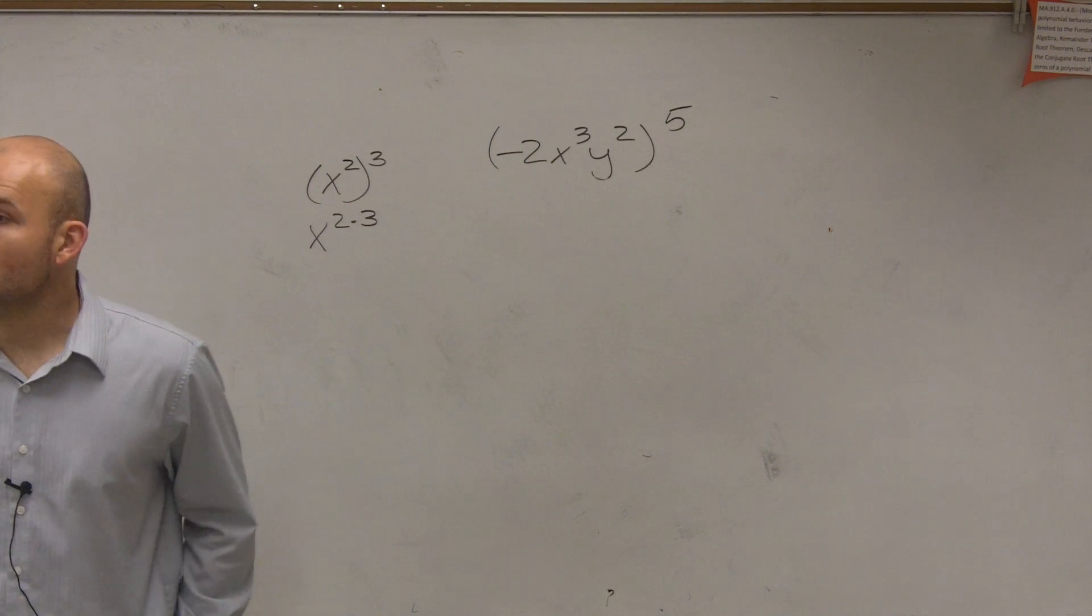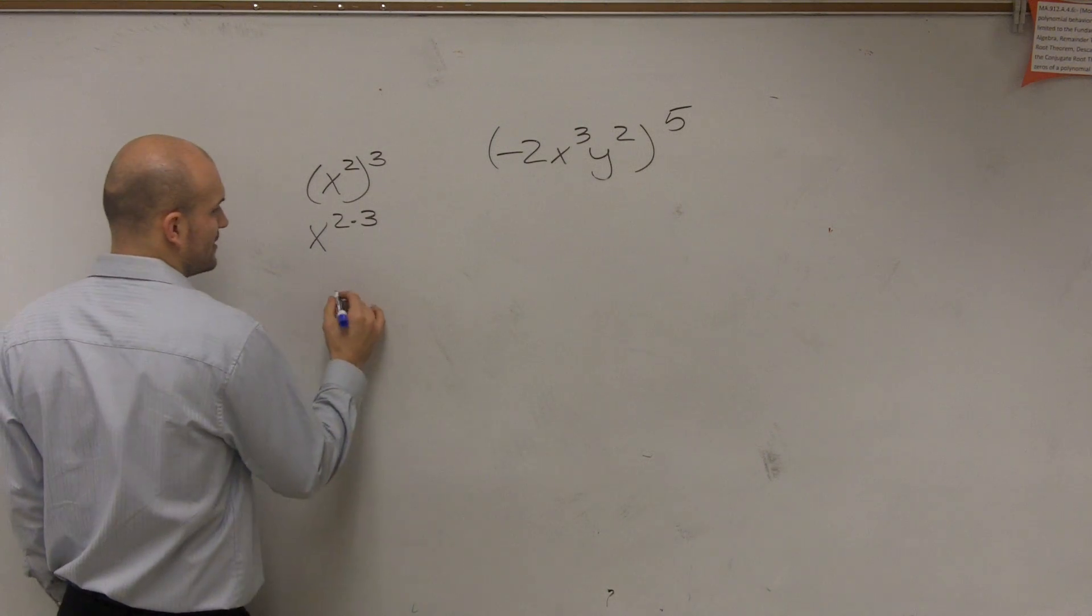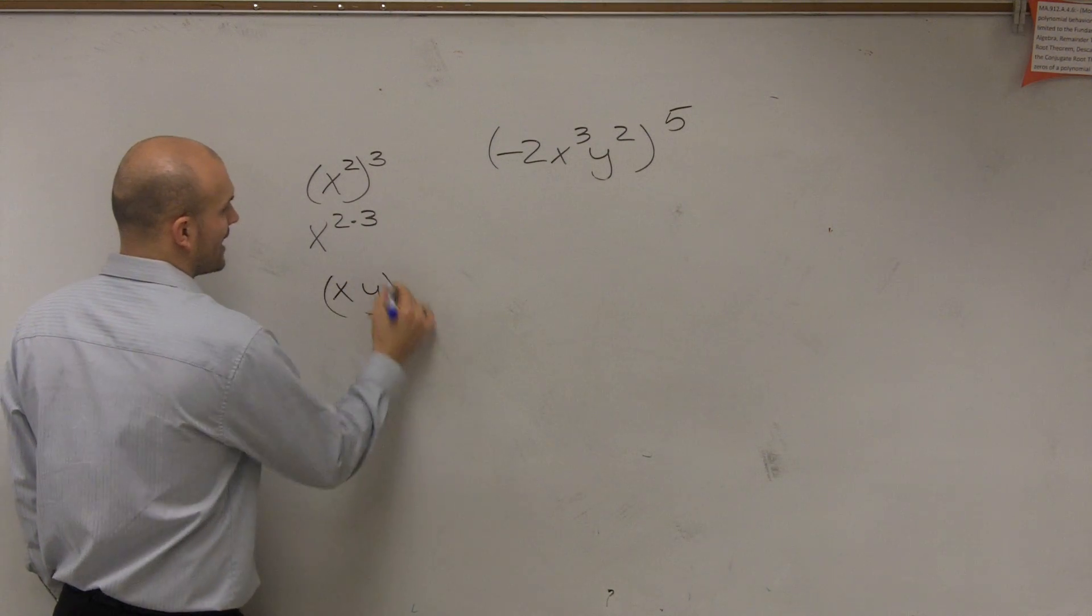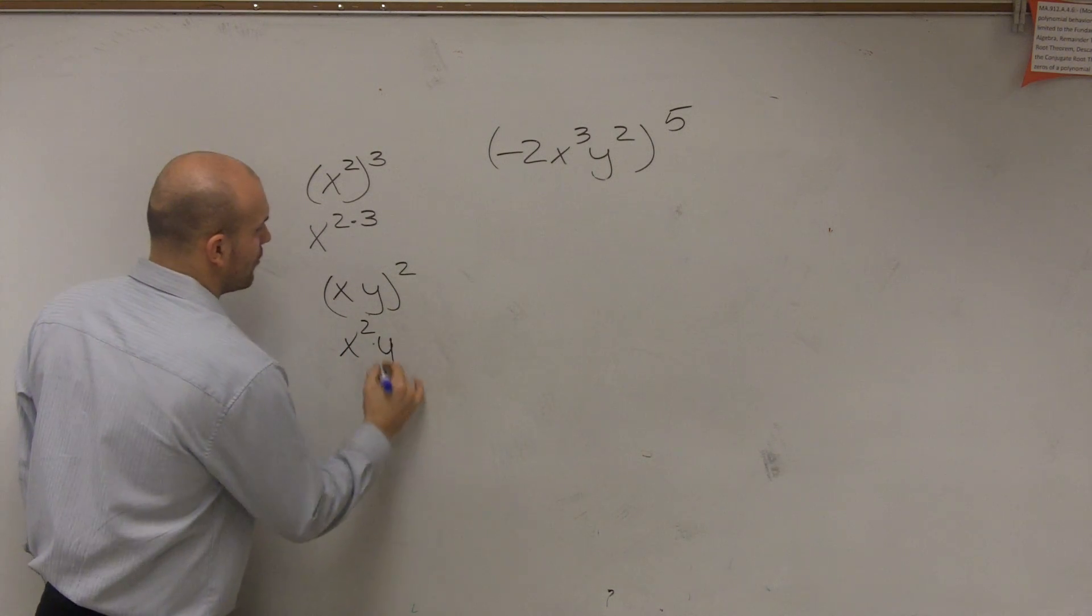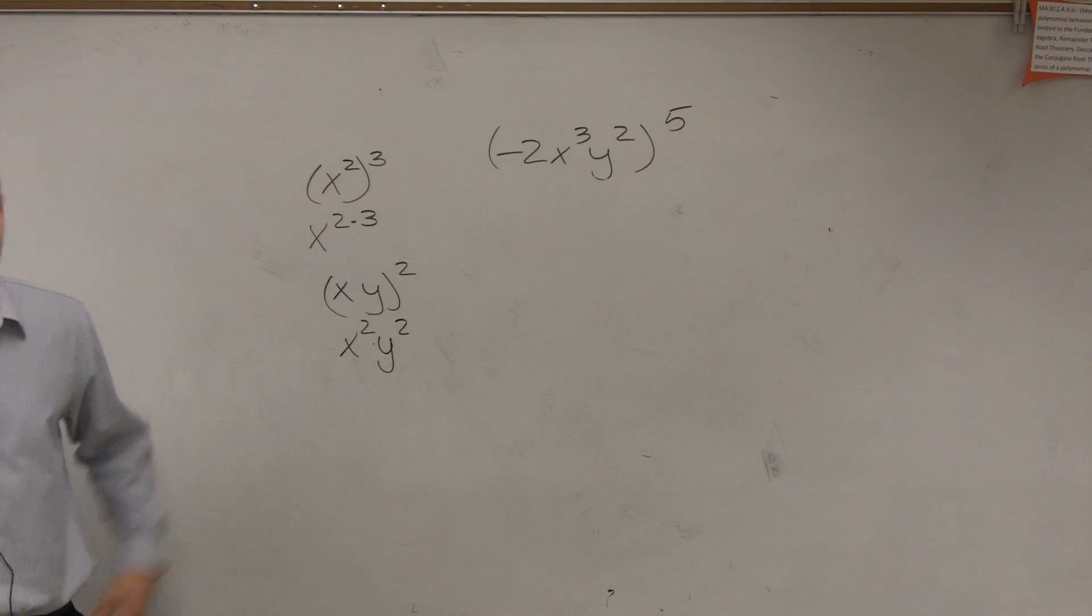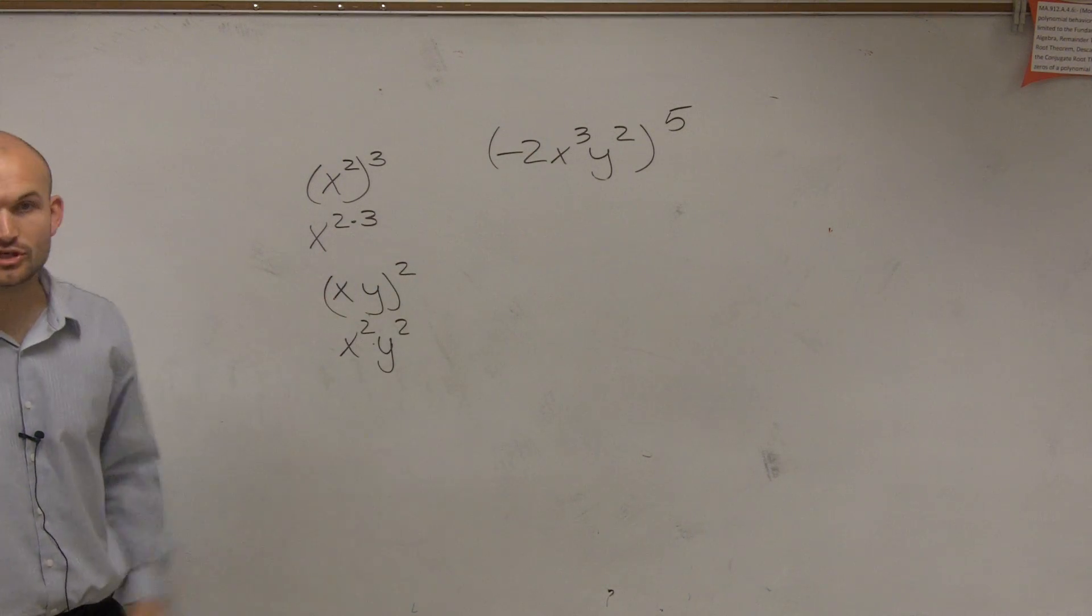So we need to apply that rule. We also need to apply the product of power rule. And the product of power rule stated if I had x times y raised to the second power, that meant x squared times y squared, right? So whatever your exponent is, as long as that was multiplication, apply to all terms inside of there.